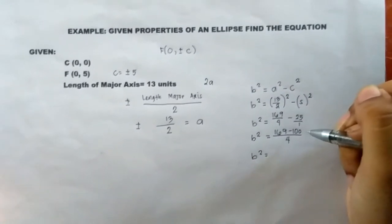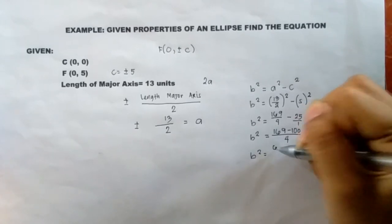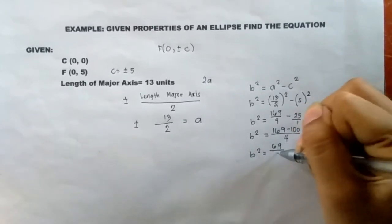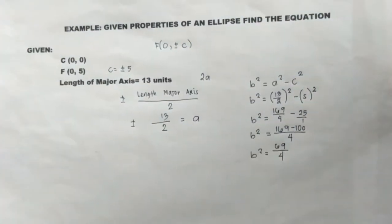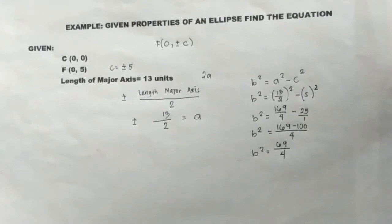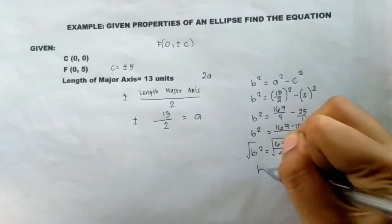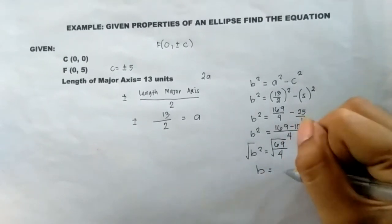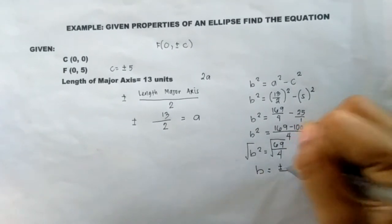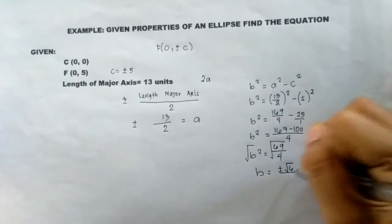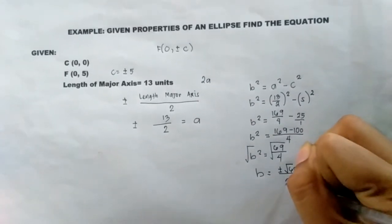169 minus 100 equals 69 over 4. Now we need to get the square root of both sides. We will get b equals ±√(69/2).